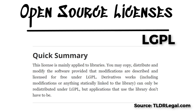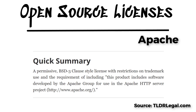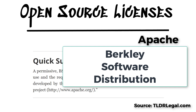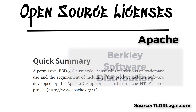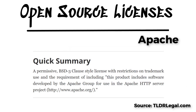It's not really one of my personal favorites, but I can understand the reasons for it existing. Next up we're going to look at the Apache license, which came about because of the license the Apache web server was released under. And the description says it all: permissive BSD-style license with restrictions on trademark use, and a requirement of including a notice that the product includes software developed by the Apache Group for use in the Apache HTTP server project.